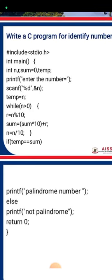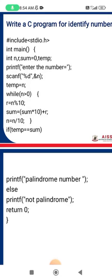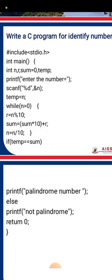After calculating the sum, we use an if condition: if temp equals equals sum, meaning if the temporary value equals the calculated reversed sum, then printf 'the number is a palindrome number'; else printf 'not a palindrome number.' After the end of the if-else, we return zero and close the brackets. This while loop with the if condition continuously rotates until we can identify whether the number is palindrome or not.